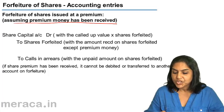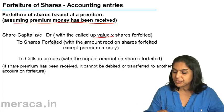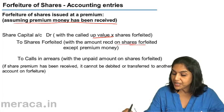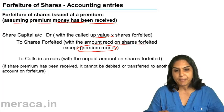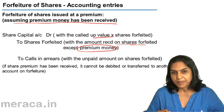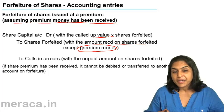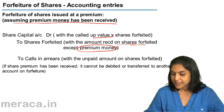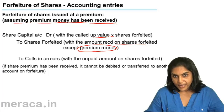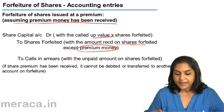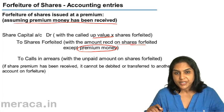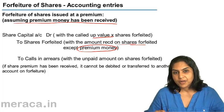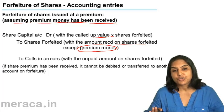So the entry becomes: Share Capital Account debited with the called-up value; to Shares Forfeited Account with the amount received from the shares forfeited but excluding the premium money — because premium money cannot be touched once it's been received; to Calls in Arrears with the unpaid amount. Therefore, the entry on forfeiture of shares issued at a premium with the premium money having been received is passed as if there was no issue at premium — the premium is completely ignored.